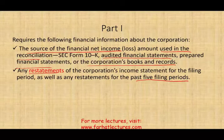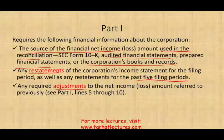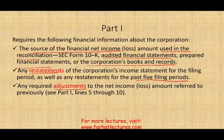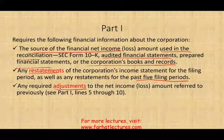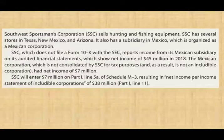They want to see if you're making any adjustments or restatements, to determine if there's any taxable effect. Let me give a quick example. Southwest Sportsman Corporation (SSC) sells hunting and fishing equipment with several stores in Texas, New Mexico, and Arizona. It also has a subsidiary in Mexico organized as a Mexican corporation. SSC reports income from its Mexican subsidiary on its audited financial statements, which show net income of $45 million in 2018.